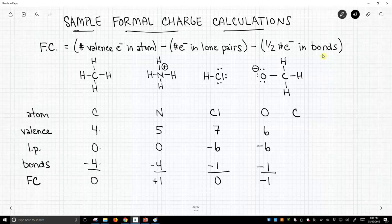And lastly, we have this carbon. This carbon, as we know, should have four valence electrons. It has no lone pair electrons. It has four bonds. That's eight electrons times a half is four. So four take away four gives us zero, and that carbon is neutral.